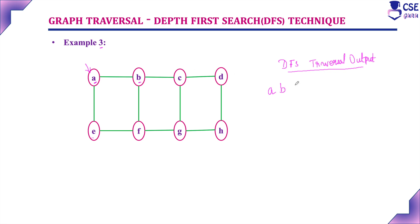Now, currently visited vertex is B. Its adjacent unvisited vertices are C and F. Here also, we need to break the tie by considering alphabetical order, so we visit C next. Currently visited vertex is now C. Consider its adjacent unvisited vertices: D and G. Among these two vertices, we break the tie by visiting vertex D.